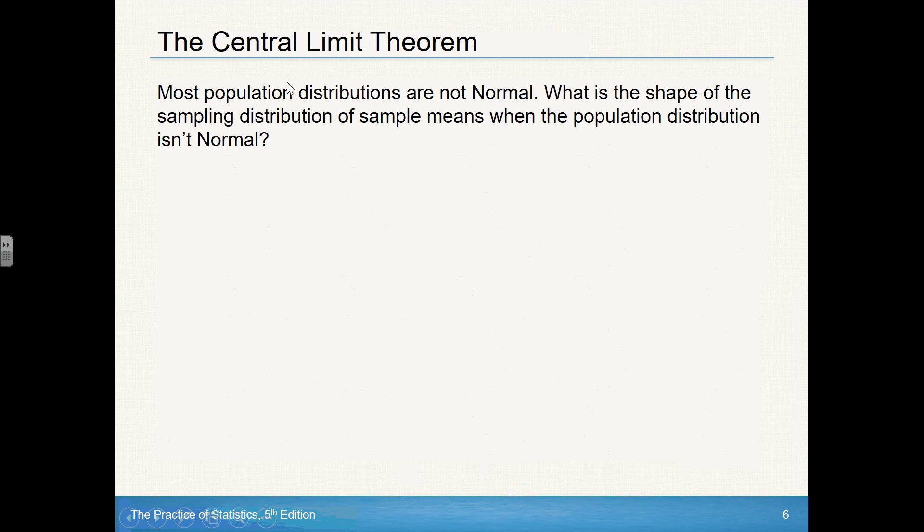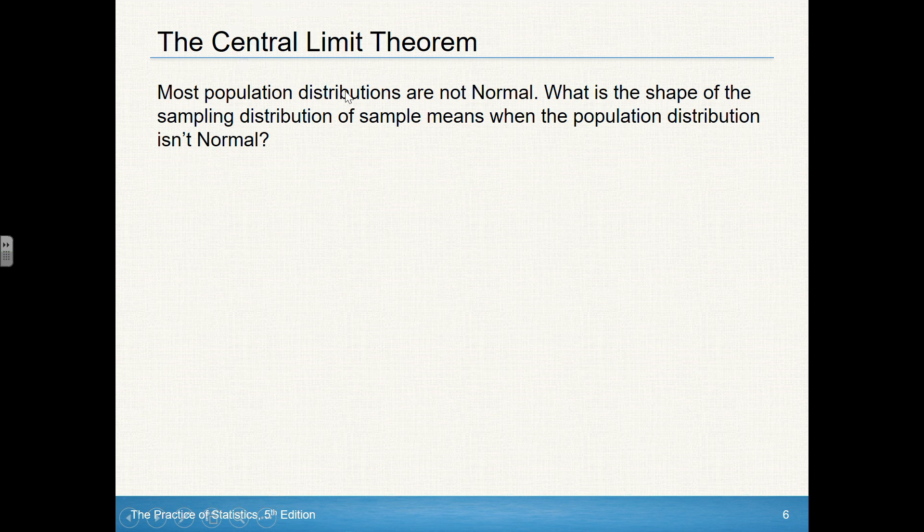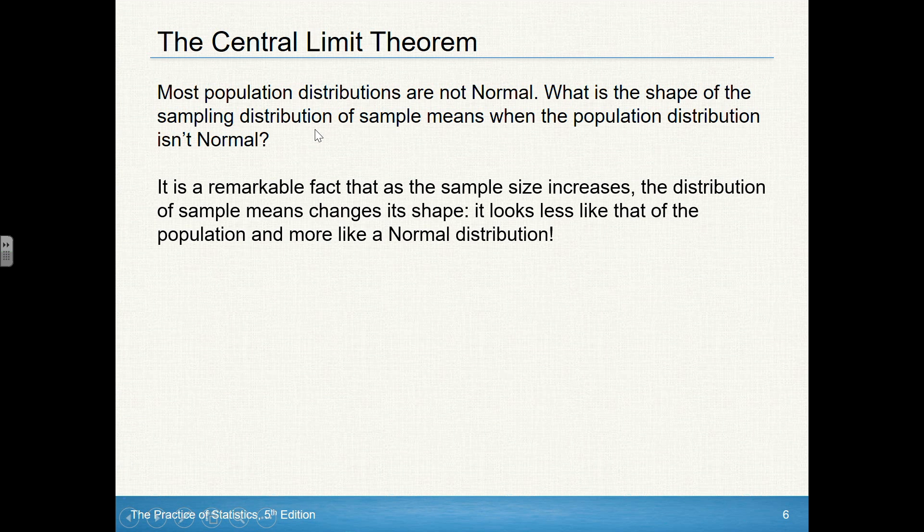Now, if it's not, if the population is not known to be normal, we can fall back on something called the central limit theorem. It says most population distributions are not normal. They're skewed one way or the other. If you're looking for the shape of that sampling distribution, well, as long as your sample size is large enough, then the sampling distribution will be approximately normal regardless of what the population looks like.